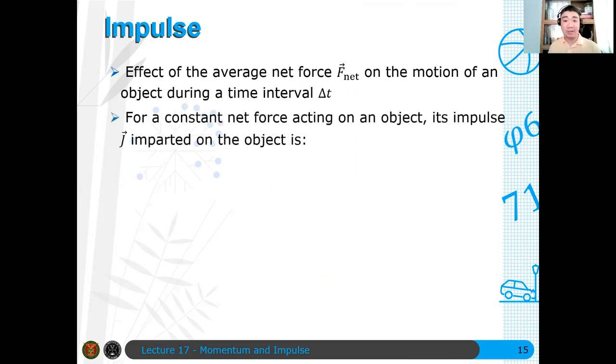So for a constant net force acting on an object, its impulse imparted on that object is given by J, which is equal to F_average delta T. So it's just a product of the average force times time. In a more formal context, actually J is an integral of the force as a function of time, dT from T1 to T2. This is actually a more formal definition of what the impulse is. But again, we will only focus on the average force imparted on a system. Kasi, again, mahirap naman hanapin yung F of T dyan.